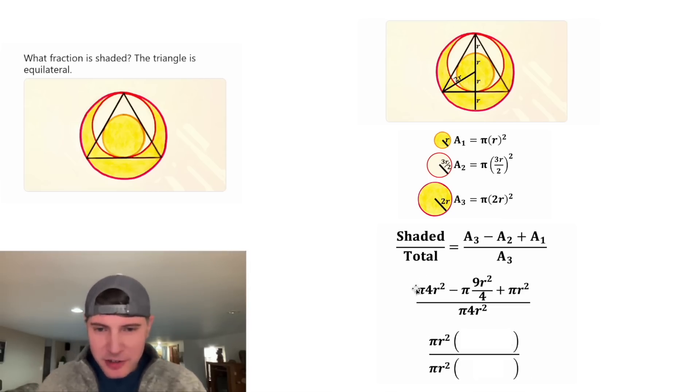On top, after we factor out a π r², this first term is just 4. And then we're going to subtract this one, which will just be 9 fourths. And then we're going to add this one, which would be a 1. And then on bottom, after we factor out a π r², we'll just have 4. So here it is with everything factored out. This π r² and this π r² will cancel each other out. Now we've got to simplify this.